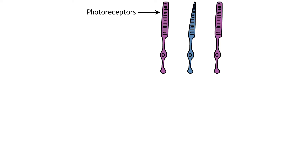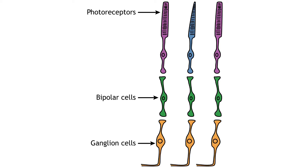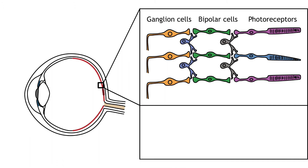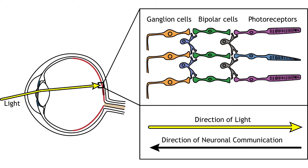In addition to the photoreceptors, there are four other cell types in the retina. The photoreceptors synapse on bipolar cells, and the bipolar cells synapse on ganglion cells. The horizontal cells allow for communication between photoreceptors by interacting with the photoreceptor-bipolar cell synapse. The amacrine cells allow for communication between bipolar cells by interacting at the bipolar cell-ganglion cell synapse. When light enters the eye and strikes the retina, it must pass through all the neuronal cell layers before reaching and activating the photoreceptors. The photoreceptors then initiate the synaptic communication back toward the ganglion cells.